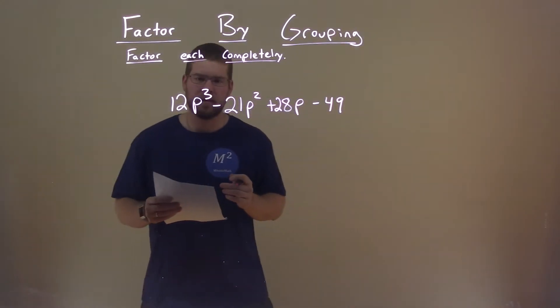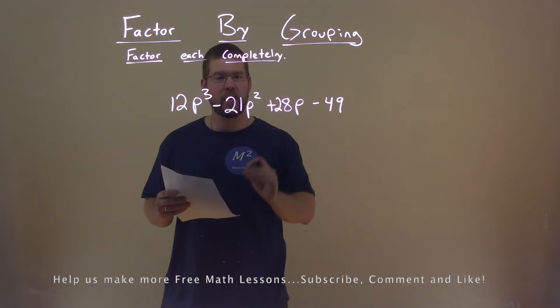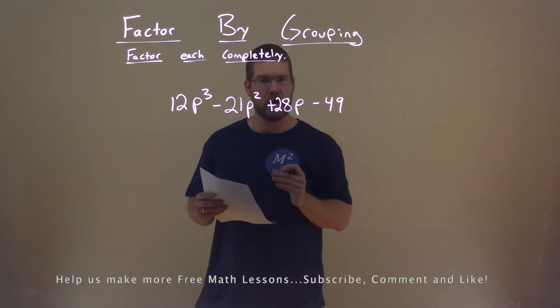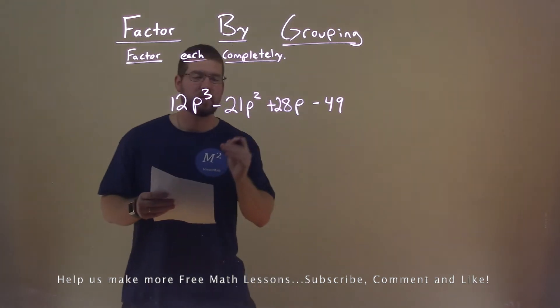We're given this problem right here: 12p to the third power minus 21p squared plus 28p minus 49, and we want to factor this completely.